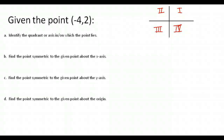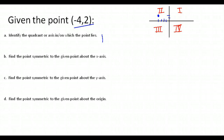They give you a point and ask you to identify these different things. The first thing is to identify the quadrant or the axis where the point lies. The point negative four, two tells us to go four to the left from the origin and up two — so notice that would be in quadrant two.